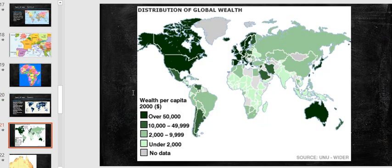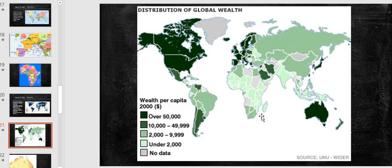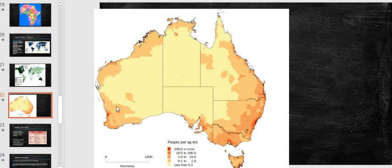Australia has about 22 to 23 million people, so we can see it's that lighter color. This thematic map shows distribution of global wealth — the darker the green, the more wealth per capita. The rich areas are Australia, Western Europe, and North America. The poorer countries in lighter green include South America, Africa, Asia, and parts of Eastern Europe. Another thematic map shows people per square kilometer in Australia, using a brown color — darker means more people, concentrated around the coasts.